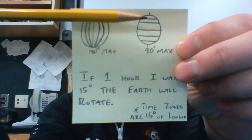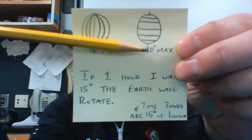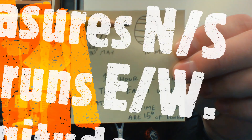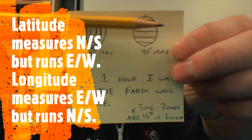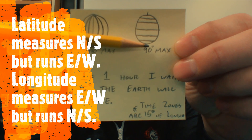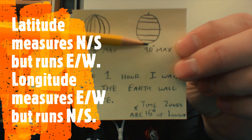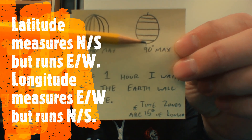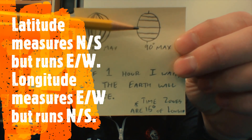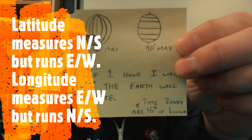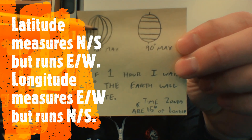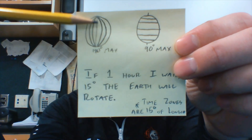A couple of different things: latitude and longitude. They like to bring up that latitude measures north to south, but the lines run east to west. Maximum latitudes are 90 degrees at the South Pole or the North Pole. They never touch.